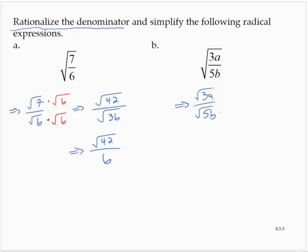Square root of 5b in the denominator. Multiply by it in both numerator and denominator.